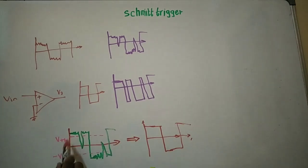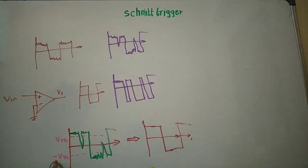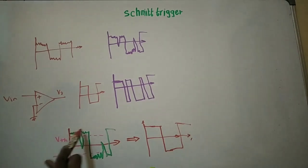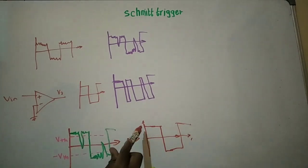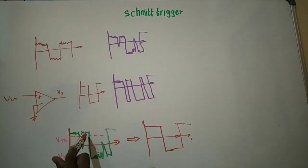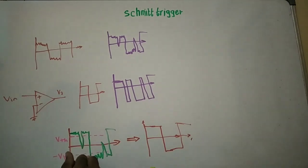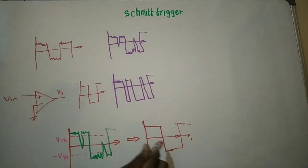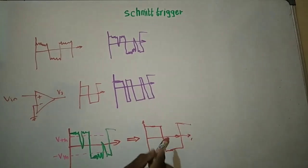The idea of Schmitt Trigger is that it has two different threshold values — positive Vth and negative Vth. When the input signal crosses the positive threshold voltage, then only you get plus Vsat at the output. When the input signal is lower than the negative threshold voltage, then only you get minus Vsat at the output of your Schmitt Trigger. So this is the basic idea of Schmitt Trigger.